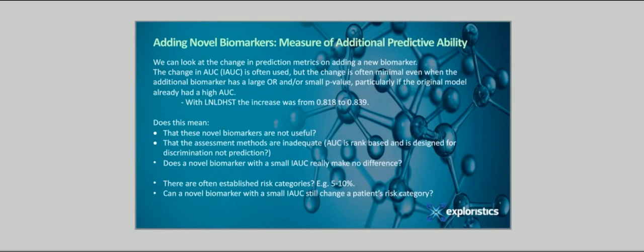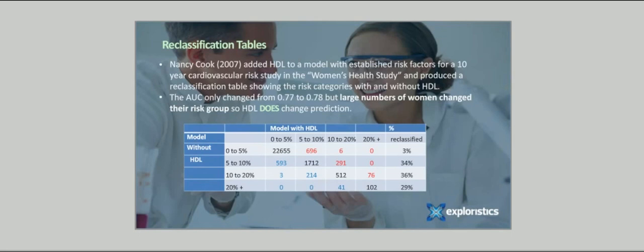Now, there are often established risk categories, e.g., 5 to 10 percent. For example, in the UK, often statins are suggested if a person's 10-year risk of heart attack is above 10 percent. So, can a novel biomarker, even with a small IAUC, still change a patient's risk category in this sense, in which case it does make a difference? Nancy Cook asked this question in a 2007 paper. She considered a different data set to our testicular cancer example, namely data from the Women's Health Study. She added HDL to a model with established risk factors for 10-year cardiovascular risk, blood pressure, LDL, smoking, etc., and produced what she called a reclassification table, showing the predictions with and without HDL divided into risk categories.